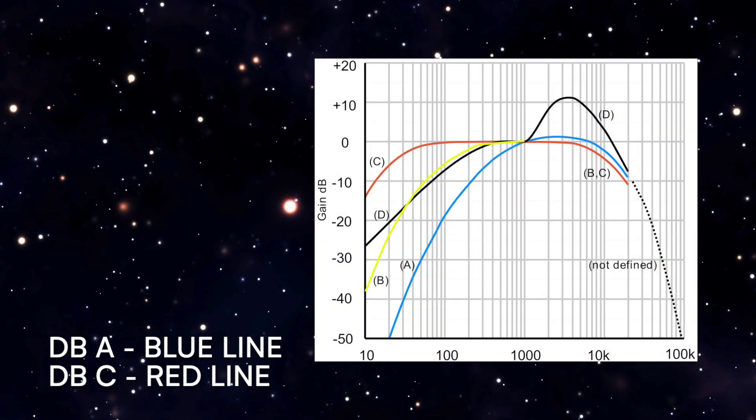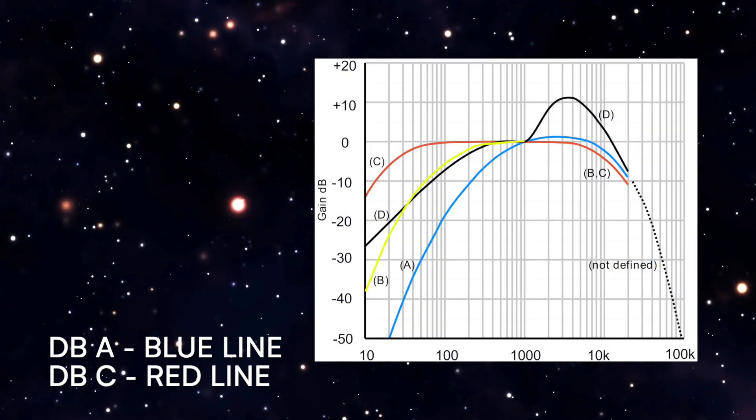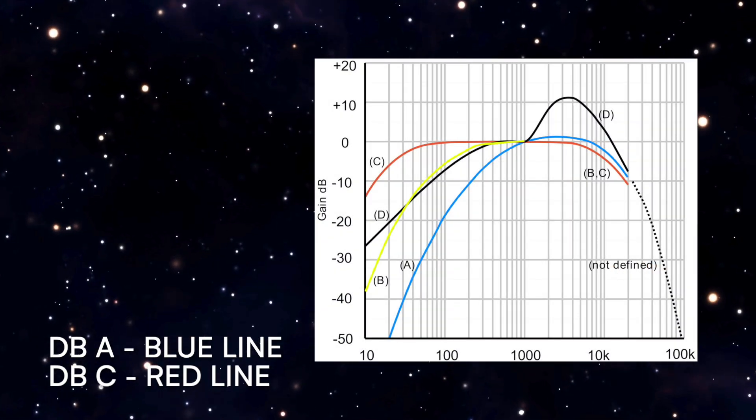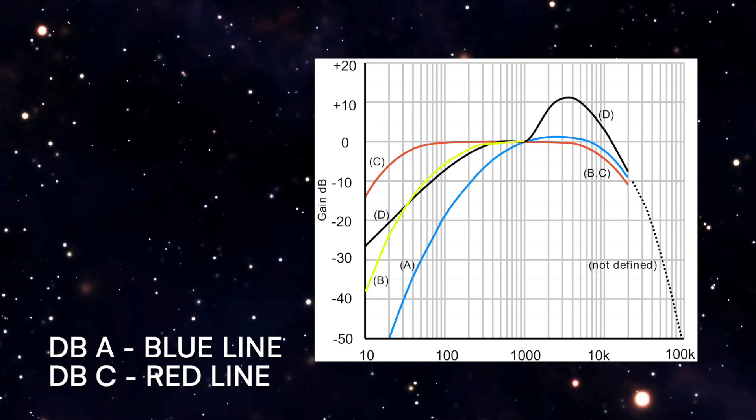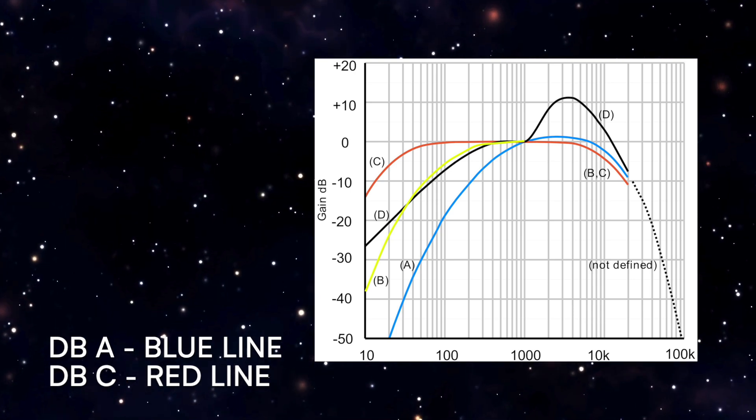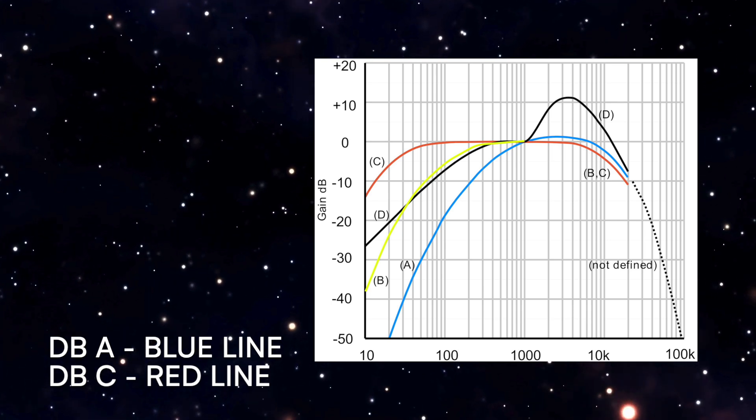The A-weighting curve mimics the human ear's sensitivity to different frequencies. It starts at 10 Hz with an attenuation of -70 dB. At 1000 Hz, there is no attenuation. The curve peaks at around 2500 Hz, where the A-filter increases the sound level.